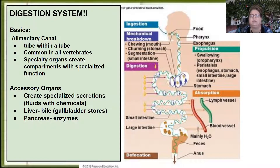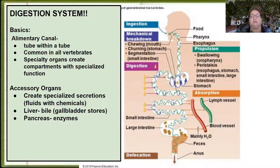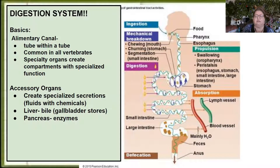The accessory organs never have food inside them, but they make specialized secretions — enzymes or chemicals that maintain the right pH — and they secrete these into the first part of the small intestine, right where everything gets dumped in.